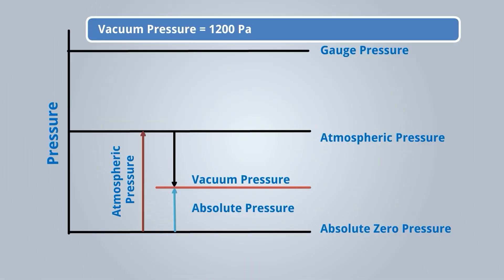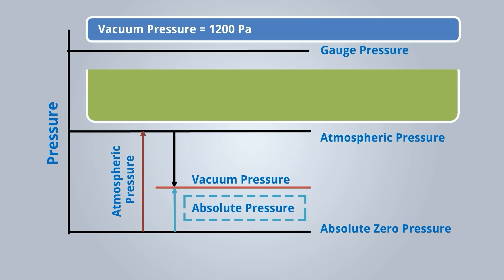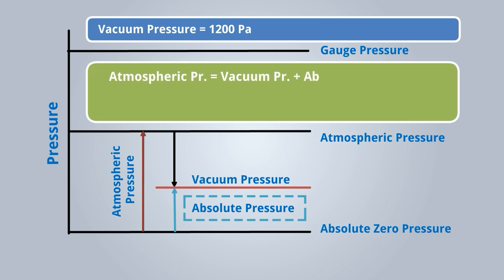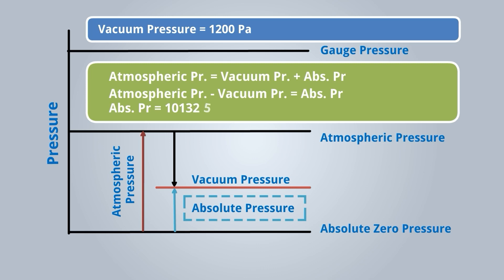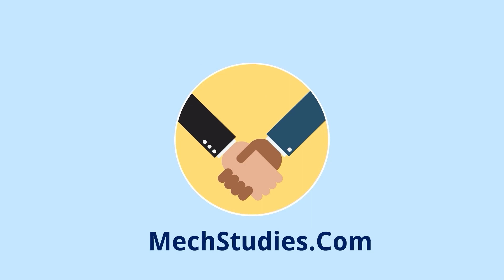Let's solve: vacuum pressure is 1,200 Pascal — find the absolute pressure. We know atmospheric pressure = vacuum pressure + absolute pressure. So absolute pressure = atmospheric pressure − vacuum pressure = 101,325 − 1,200 = 100,125 Pascal. Thank you so much, please visit makestudies.com.